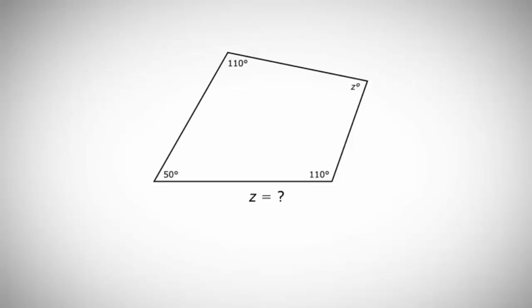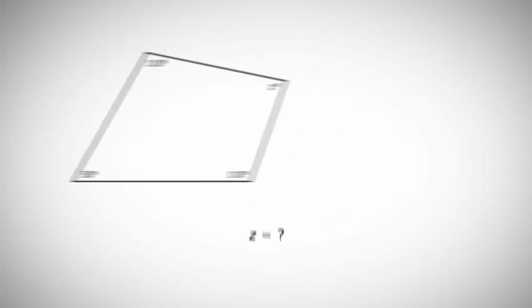A quadrilateral is basically just two triangles smooshed together. We could draw a line from any two vertices of the quadrilateral to divide this shape into two triangles. So what that means is that the interior angles are going to add up to 360 degrees. Now we can write a formula and solve for z: 110 plus 110 plus 50 plus z equals 360. Combine your like terms to give us the equation 360 equals 270 plus z. Final step is to isolate z by subtracting 270 from both sides, which gives you a value of z equals 90 degrees.